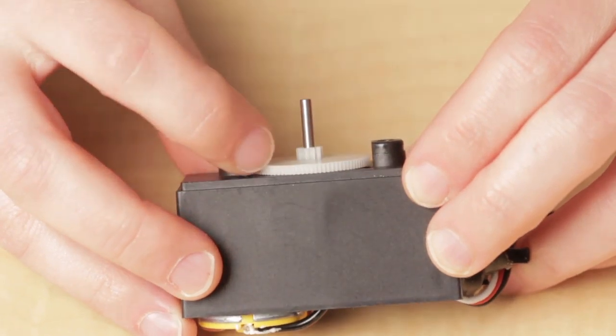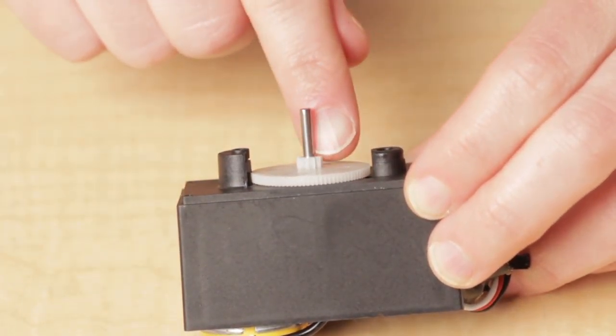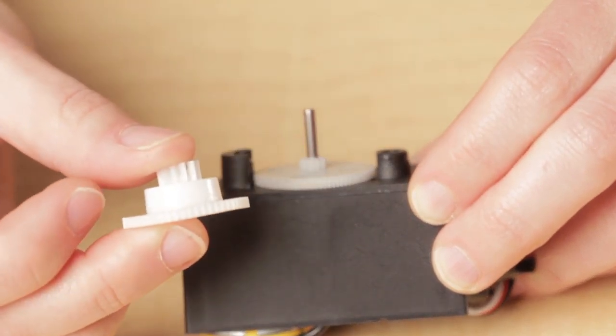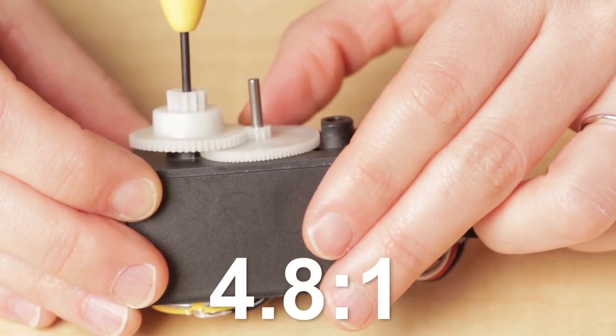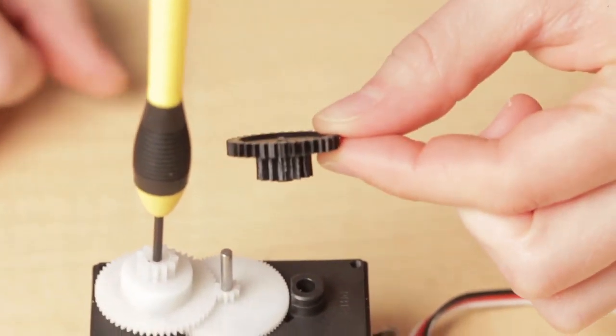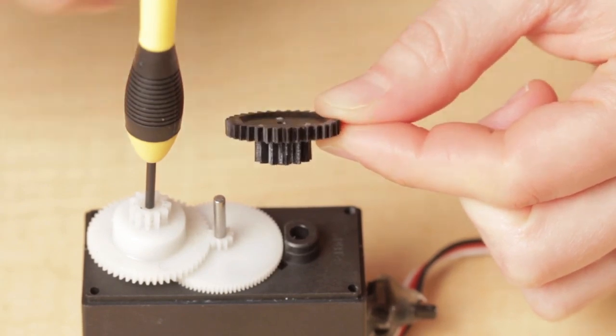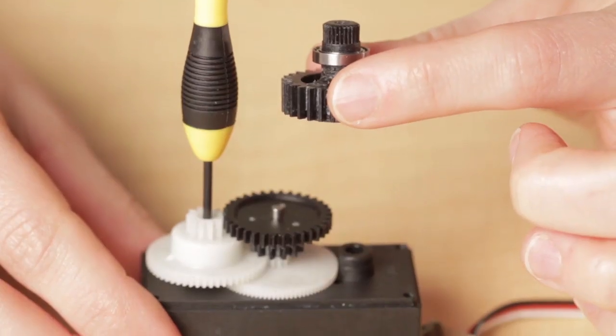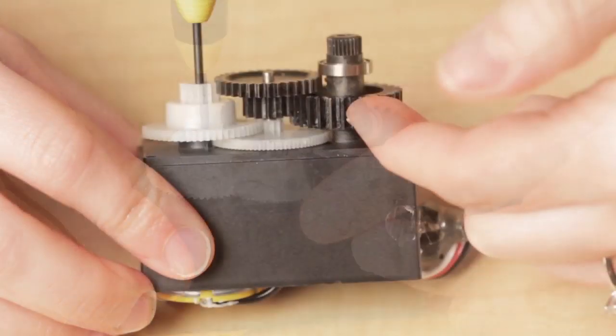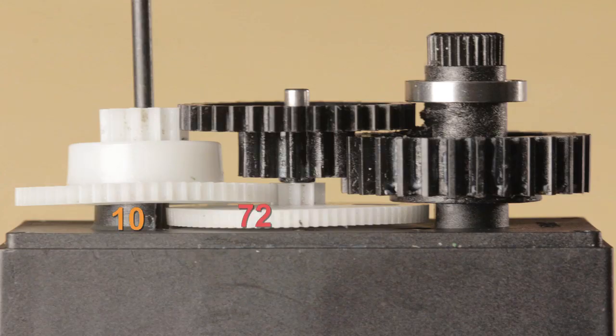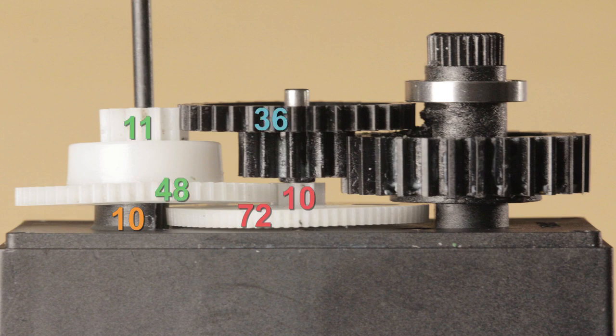This large 72-tooth gear is part of a single molding with a 10-tooth gear. The 10-tooth gear on top of the 72-tooth gear is mated to a plastic gear with 48 teeth as you see here. So that stage provides a speed reduction of 4.8 to 1. The 48-tooth gear is molded to an 11-tooth gear. The 11-tooth gear is mated to a black 36-tooth gear. This 36-tooth gear is molded to a 16-tooth gear. The 16-tooth gear is mated to this black 42-tooth gear, which is splined onto the output shaft.